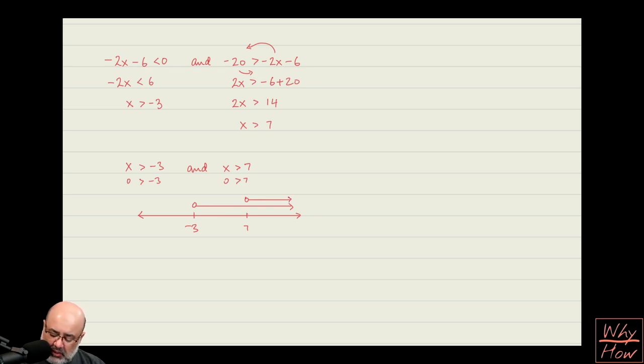And now, because this is an AND problem, we are looking for where there is a sandwich. Where are the two lines on top of each other? So are they on top of each other in this region? No, the lines don't even exist there. Are they on top of each other between negative 3 and 7? No, because the top line doesn't even exist there. It's only the bottom one. What about between 7 and infinity? Yes, that's where the two lines are on top of each other. So the interval of the solution is where the two lines overlap. The overlap happens from 7 to infinity.